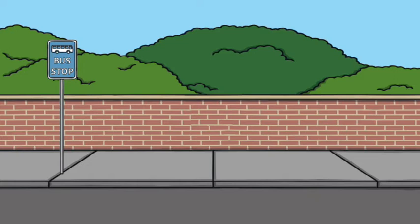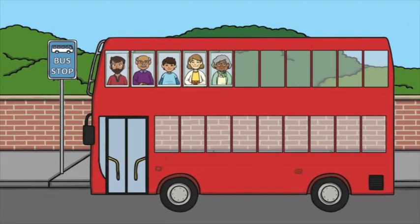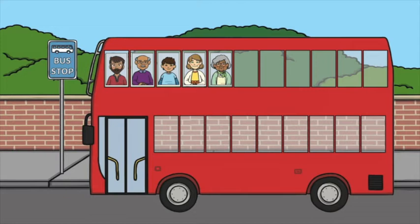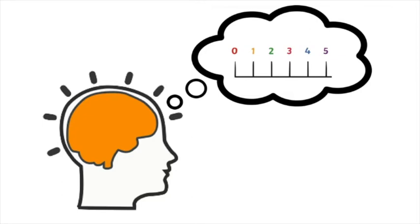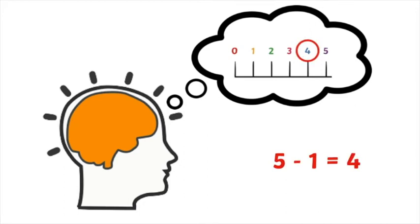OK, let's begin to do some subtraction. We can use the First Then Now method. First, there were five passengers on the bus. Then one passenger popped off. Now how many passengers are there? Four. Five take away one equals four. Imagine a number line — start at five and count back one. Five take away one equals four.